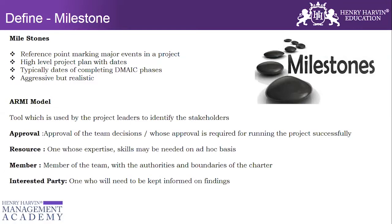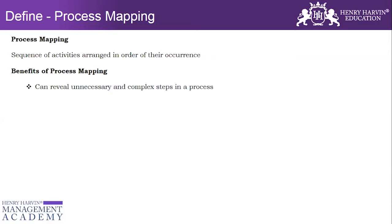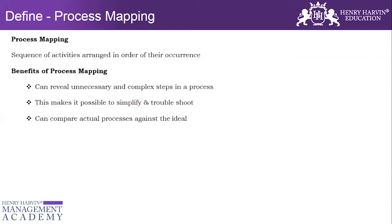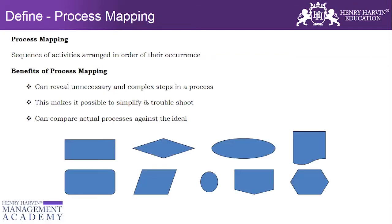Now we're going to talk about process mapping. It is one of the important tools in the Define phase. Process mapping is the sequence of activities arranged in order of outcomes. The benefits of process mapping are that it can reveal unnecessary and complex steps in a process, making it possible to simplify and troubleshoot, and it can compare actual processes against the ideal.